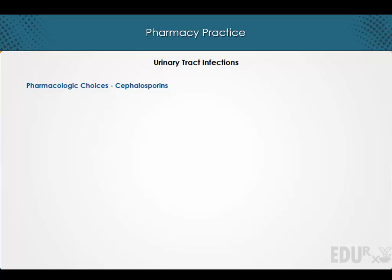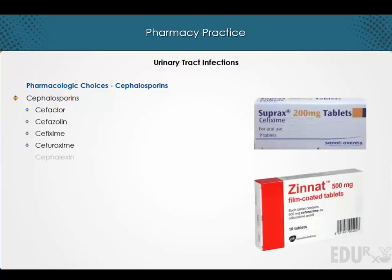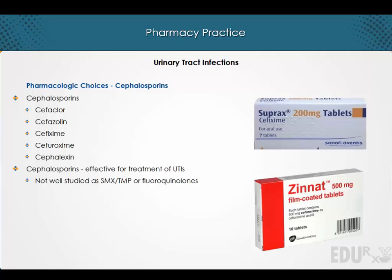Cephalosporins: all cephalosporins, including cefaclor, cefazolin, cefixime, cefuroxime, and cephalexin, are effective for the treatment of urinary tract infections. These agents are not as well studied as trimethoprim-sulfamethoxazole or the fluoroquinolones, and are somewhat less effective for acute cystitis, especially with short courses of therapy.